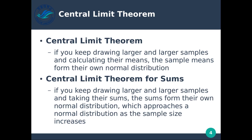To summarize the central limit theorem: if you keep drawing larger and larger samples and calculating their means, the sample means form their own normal distribution. We're essentially taking data from one distribution and converting it into a normal distribution for analysis. There are many different reasons we would do that, and I'll show some examples shortly.